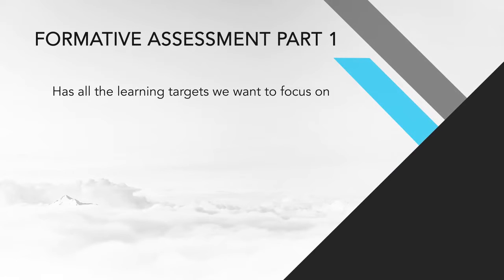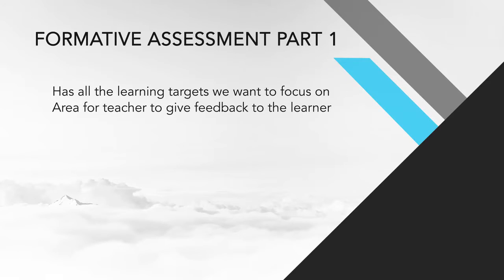The first part of the formative assessment has all of the learning targets that we want to focus on. It might be all of the learning targets on the assessment or just part, but these are the skills right from the unit plan, and they can even have that alphanumeric structure from the unit plan, numbered for the learner. So if it says 'identify the characteristics of a cell,' there it is as a learning target. Next to that learning target is an area for the teacher to give feedback about where the learner is in the process.